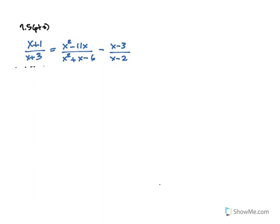Here we have a new equation. We need to get rid of these fractions first by identifying the LCD so we can multiply everybody by it. I'm going to have to factor the trinomial, using the other two denominators to help identify the factors. The factors give a 6, which is 1, 3, and 2 — 3 is plus, 2 is minus. So the LCD is x plus 3 times x minus 2. I'm going to rewrite the problem with those factored denominators.